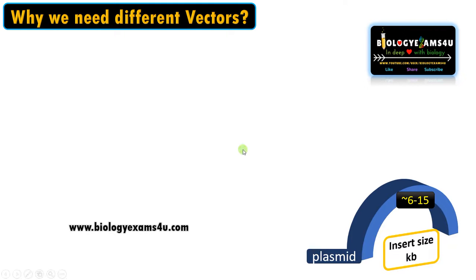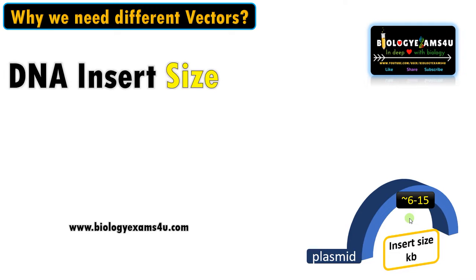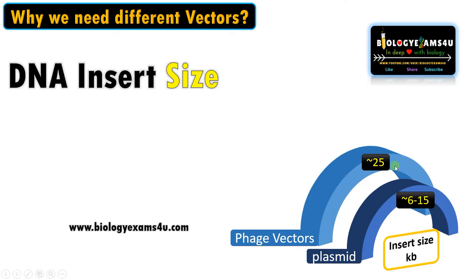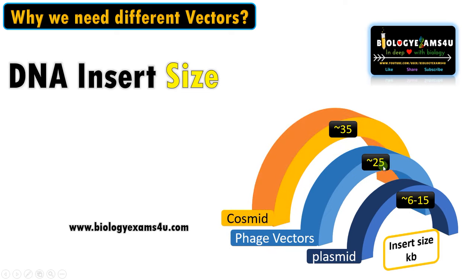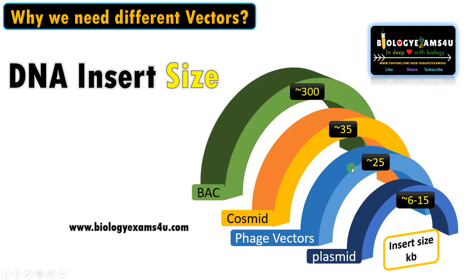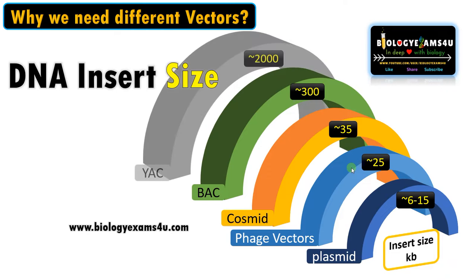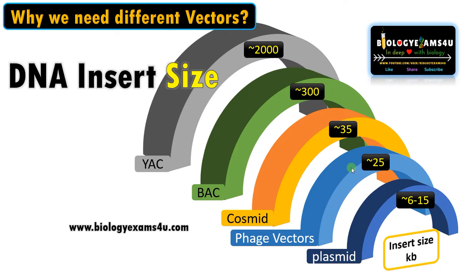Hi friends, hope you are fine. Why do we have different kinds of vectors? Let's take the case of plasmid — plasmid is one of the most common gene cloning vectors with an insert size of 6 to 15 kb, so it can accommodate only a small DNA fragment. The prime reason for different types of vectors is the DNA insert size. We have phage vectors that can accommodate up to 25 kb, then cosmid approximately 35 kb, then BAC up to 300 kb.